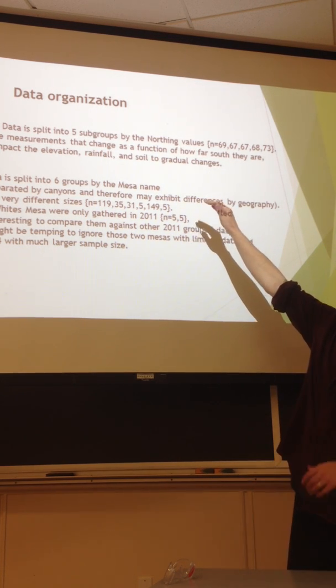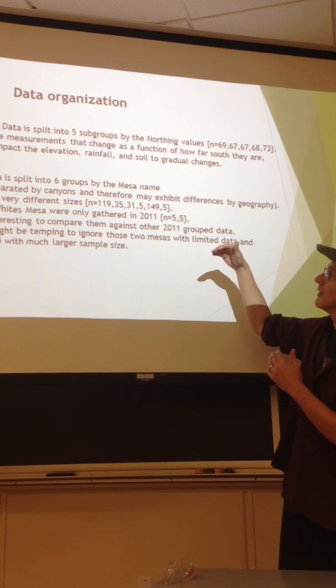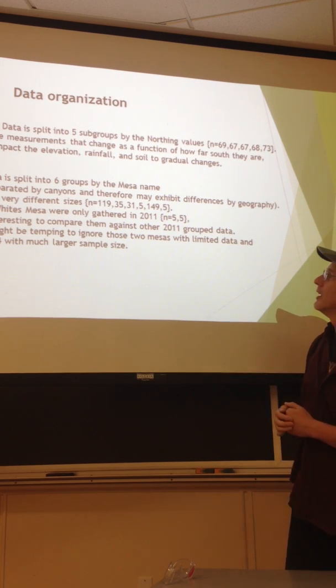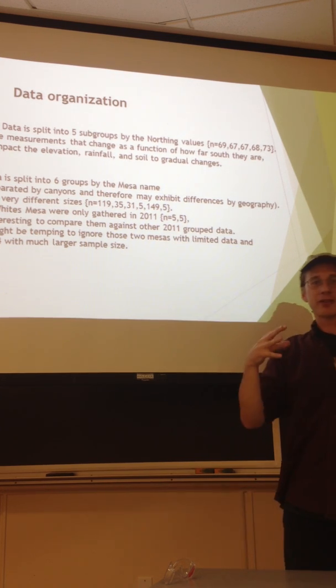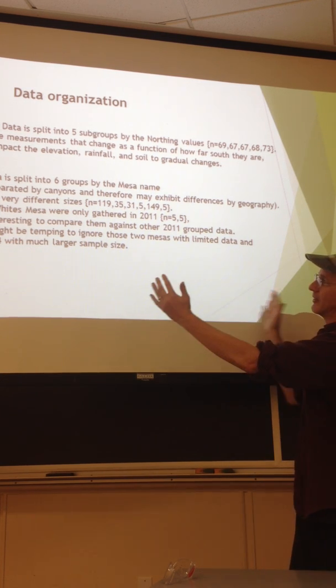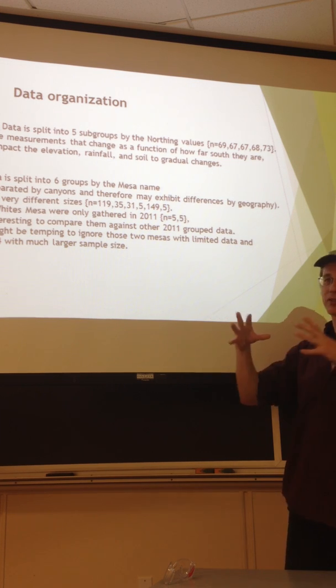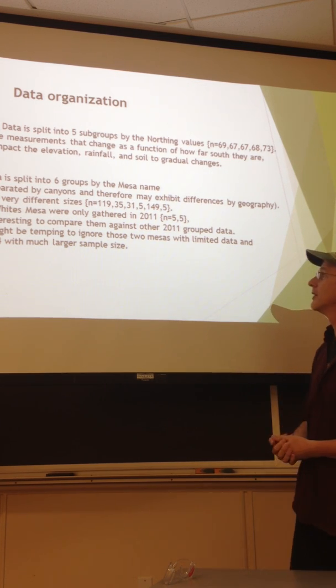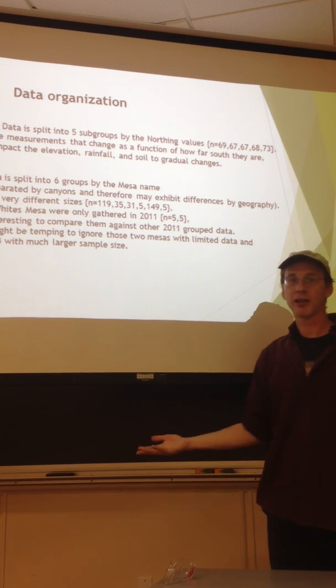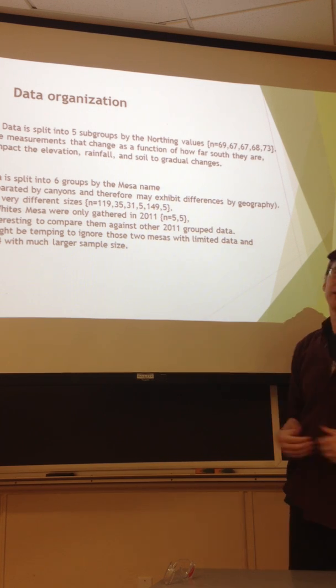And so these are the two different groups of data. The northing sets that I explained earlier that are just based on that UTM northing value. And then the Mesa sets, which are based on the name of the Mesa that the plots were in. So you can almost think of that as an east to west gradient. But they're just different geographical units to compare the data. So those are just some that might turn out to be superficial grouping. But just a way to kind of compartmentalize the data and test.